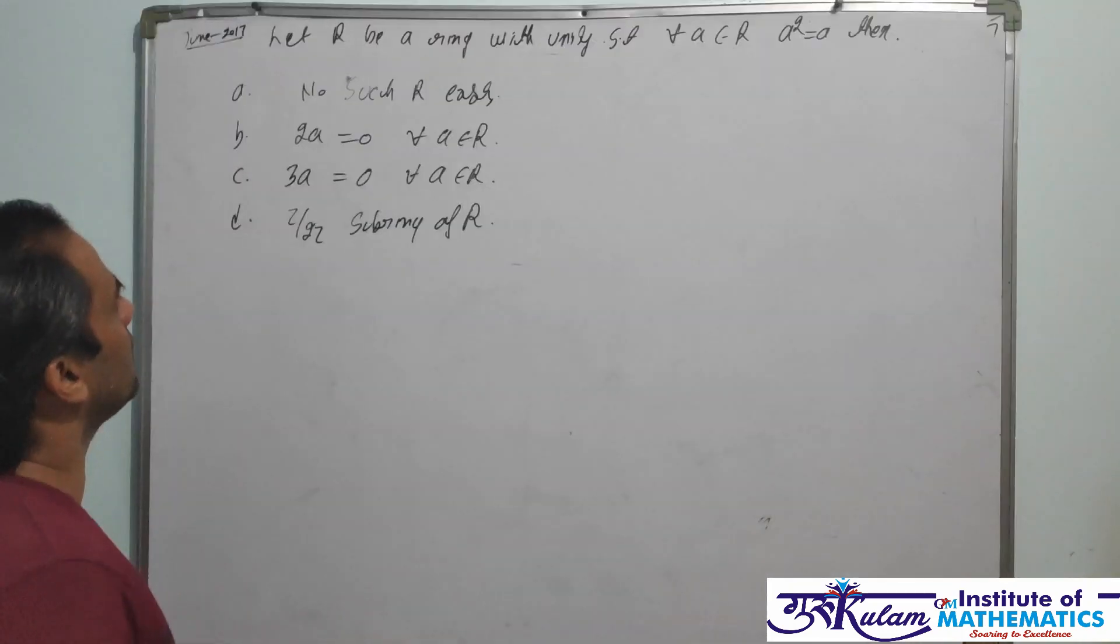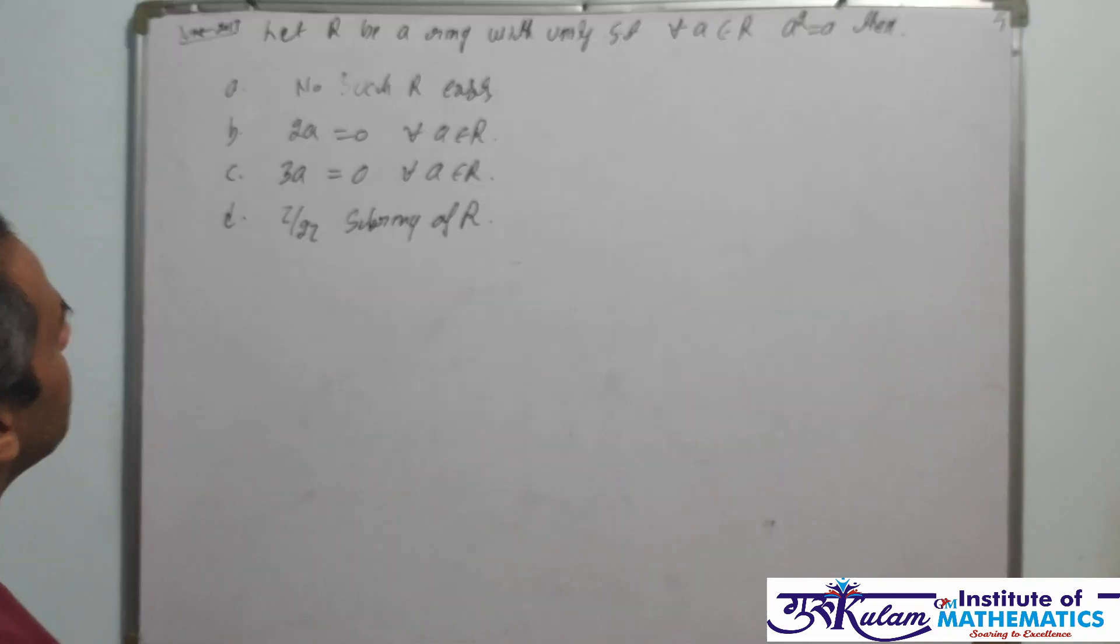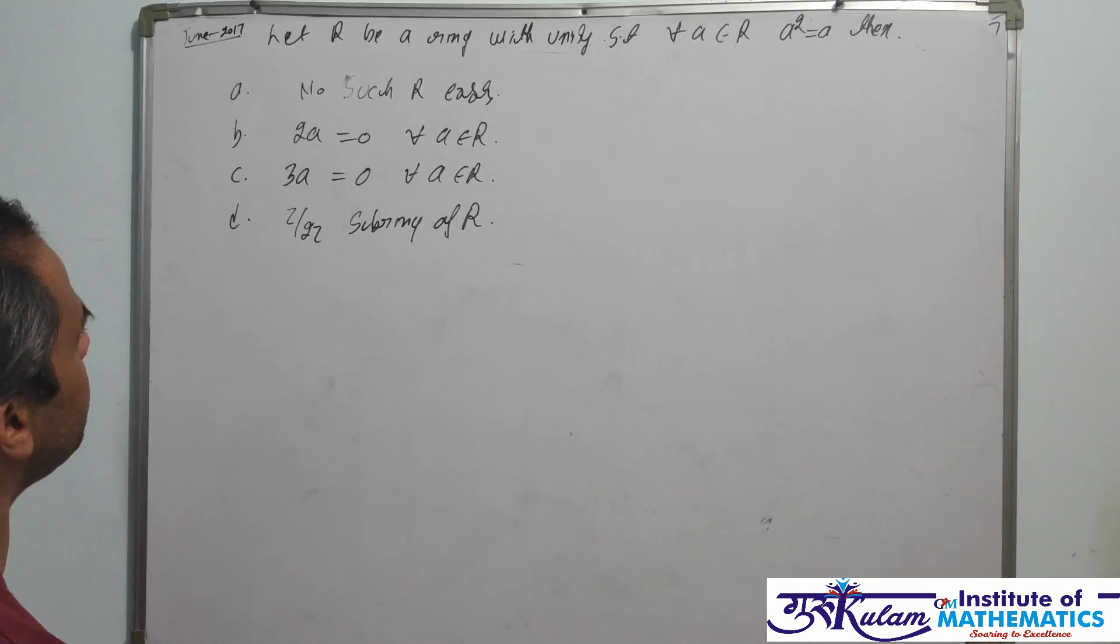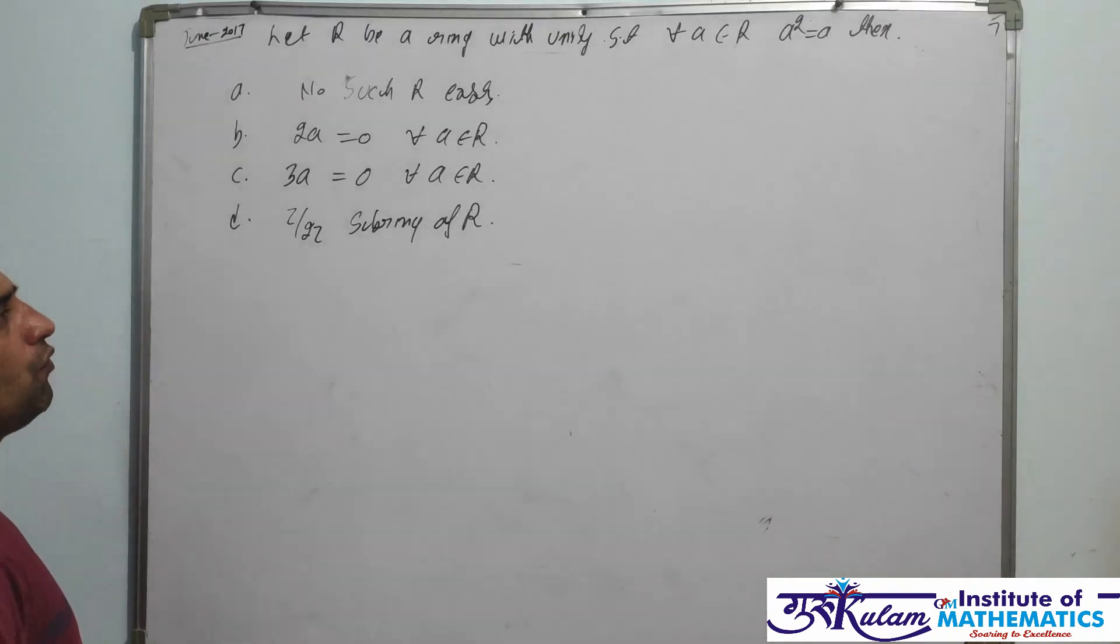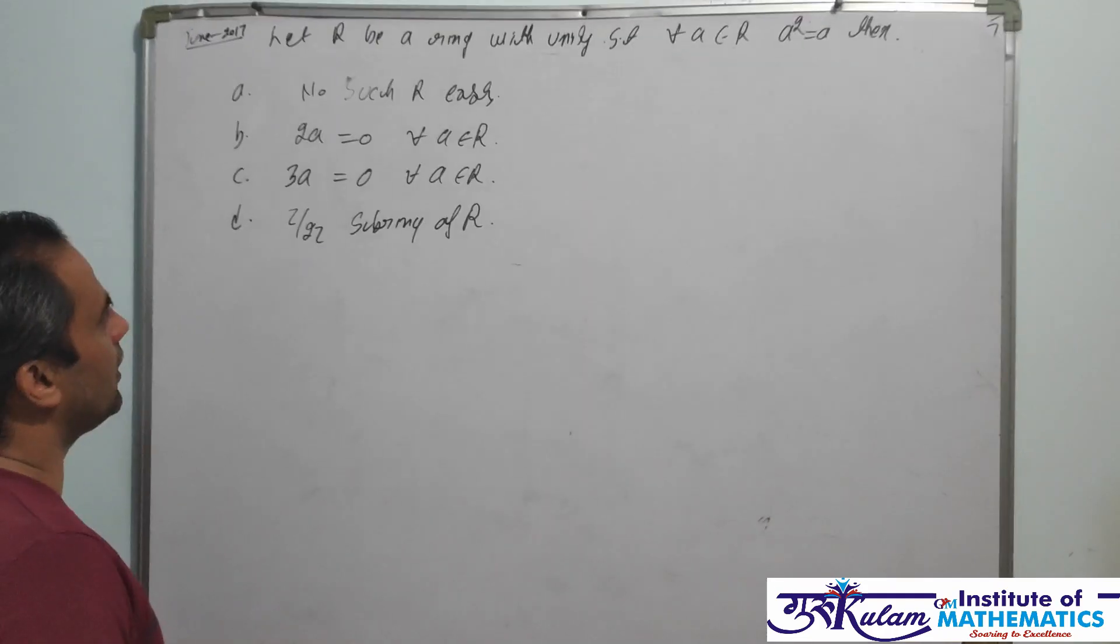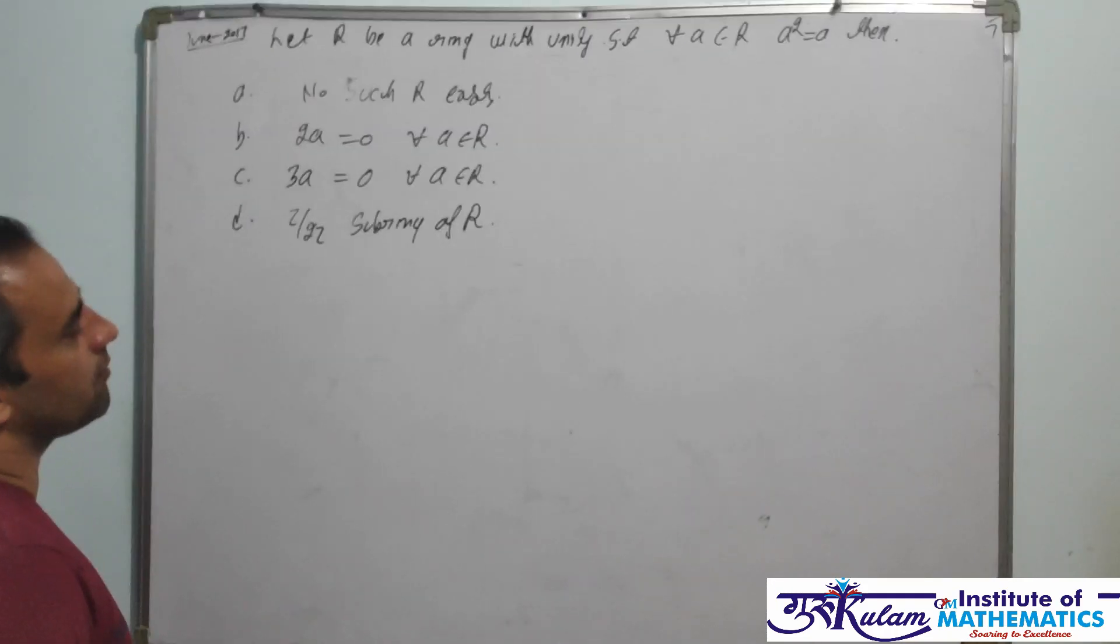Then we have to verify some properties. First, no such ring exists. Second, 2A = 0 for every A belongs to R. Third, 3A = 0 for every A belongs to R. And Z by 2Z is a subring of R.